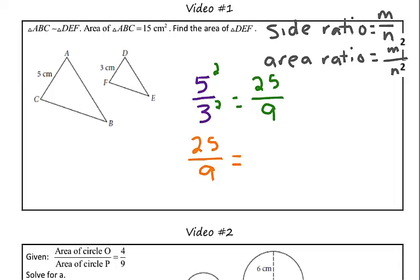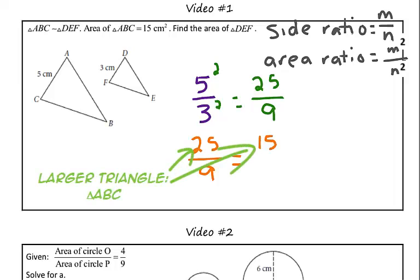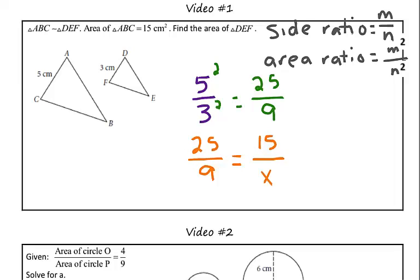Well, we know the area of triangle ABC is 15 centimeters squared. Since that's the larger triangle, that goes in the numerator. And we don't know the area of triangle DEF, so we're going to substitute a variable, and we're going to use X to solve for this area.